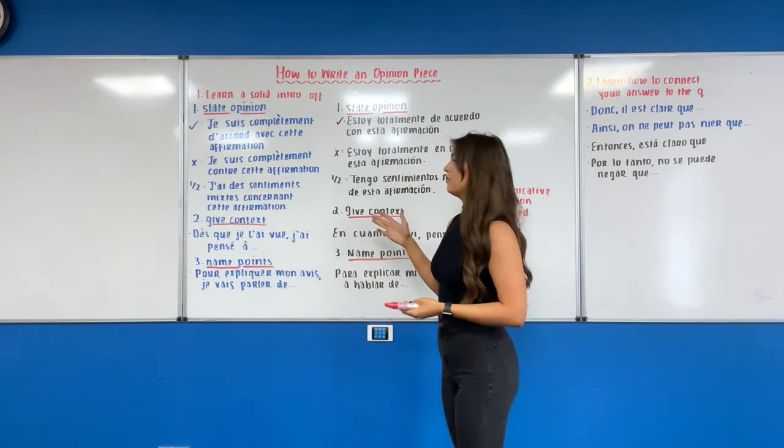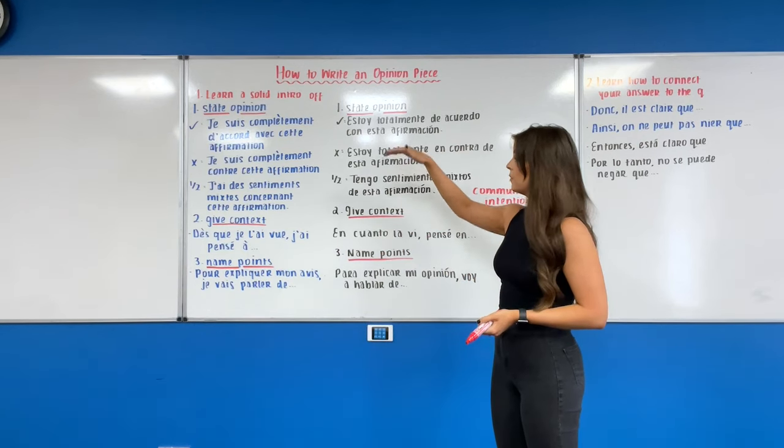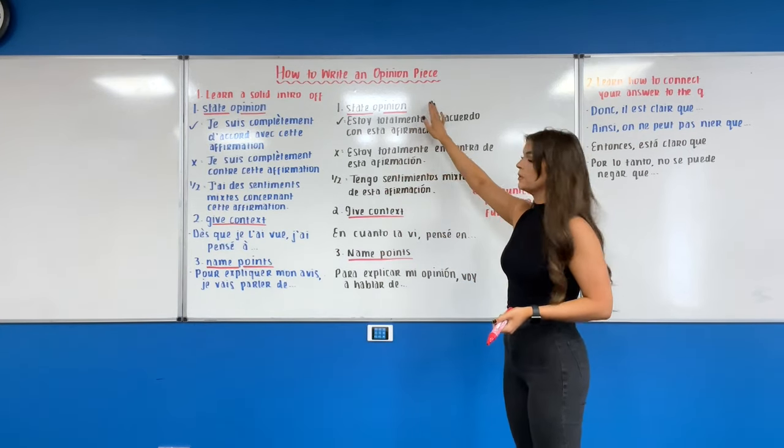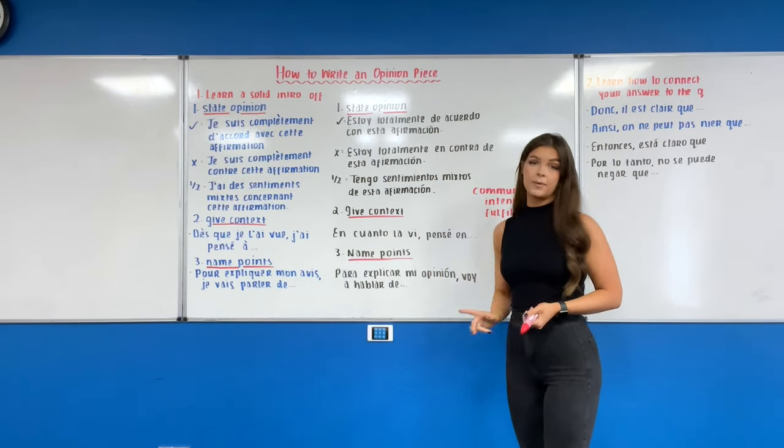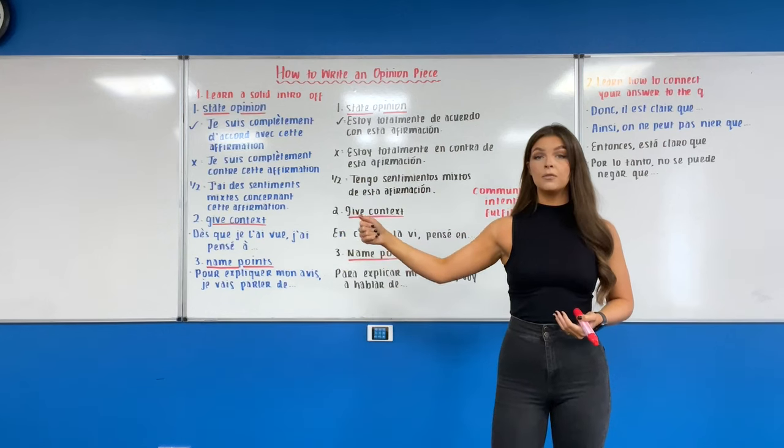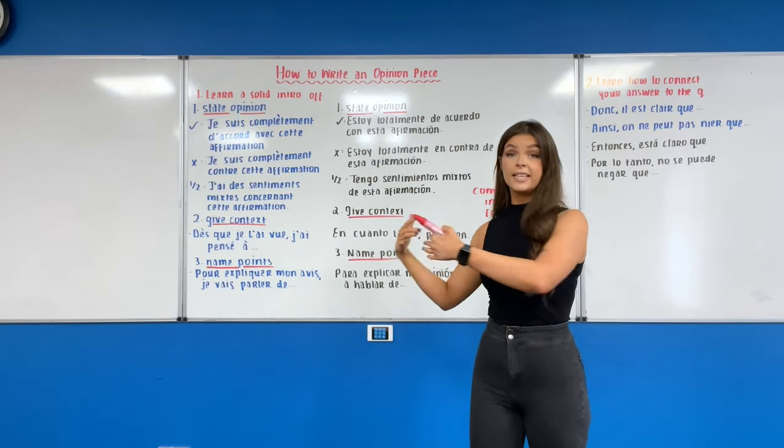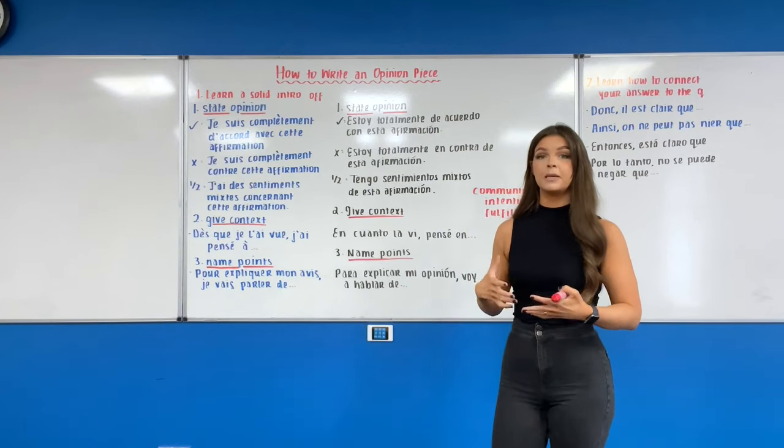So that is why I tend to follow this pattern for French and Spanish, following these three steps. Step number one: stating our opinion. Step number two: giving context. And step number three: naming our points. We're really trying to give the examiner a blueprint to follow for our answer so that by the time we get to the end of the opinion piece the whole thing makes sense as one big piece of work.